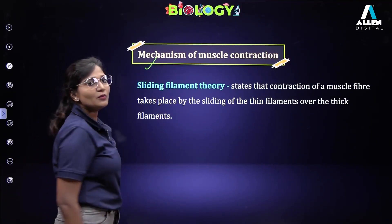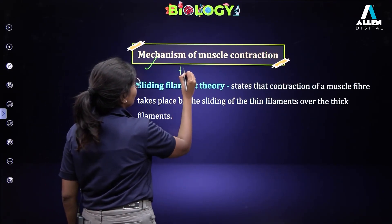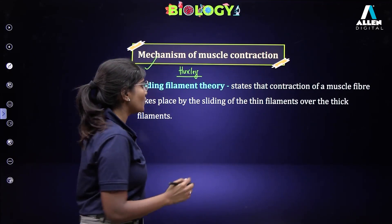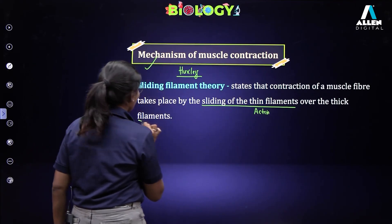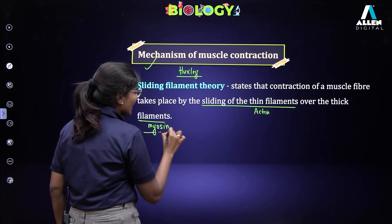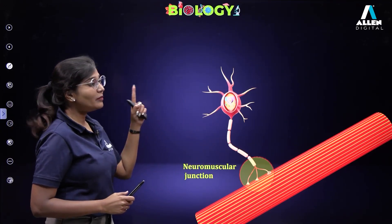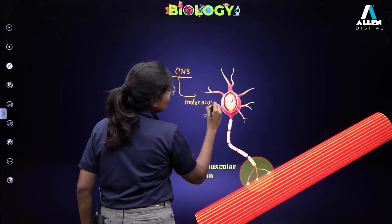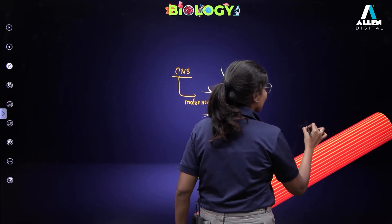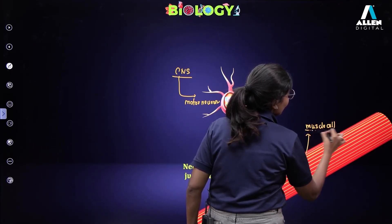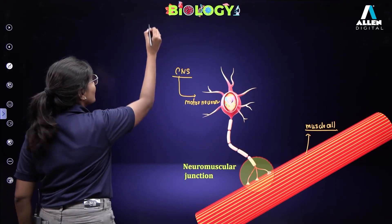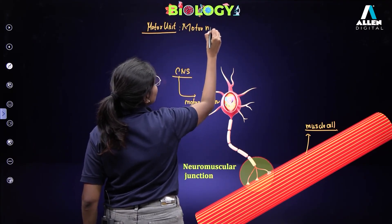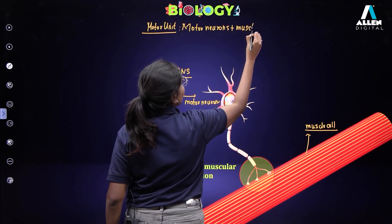The mechanism of muscle contraction was explained by Huxley. The thin filament slides over the thick filament — actin slides over myosin; myosin doesn't move, only actin moves. Muscle contracts only when the central nervous system sends motor neuron impulses to the muscle cell. The motor neuron plus the muscle cell together are called the motor unit.